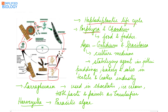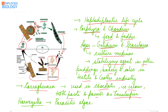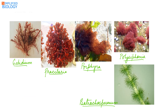Porphyra and Chondrus are used in food and fodder. Agar, obtained from Gelidium and Gracilaria, is used in culture medium and as a stabilizing agent in jellies, puddings, bakery, and also in textile and leather industry. Carrageenan is used in chocolates, ice creams, toothpaste, and paints as an emulsifier. Harveyella is a red alga that is parasitic. Examples of red algae are Gelidium, Gracilaria, Porphyra, Polysiphonia, and Batrachospermum. Batrachospermum is green in color as it is a freshwater form.